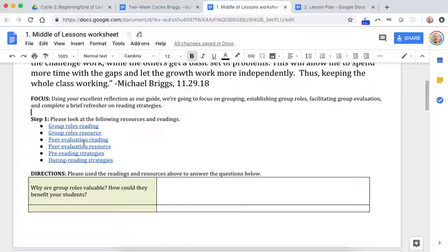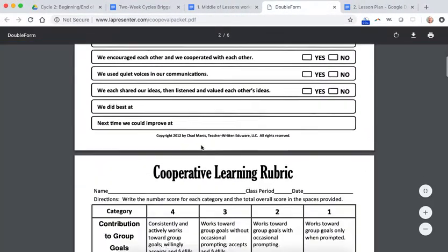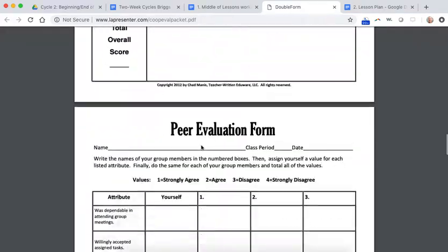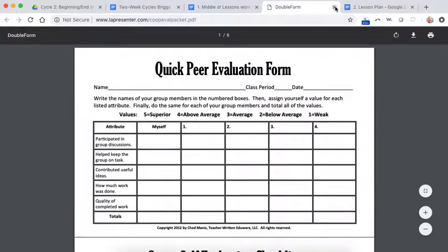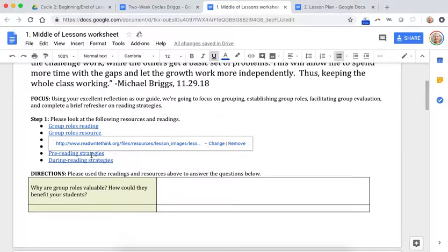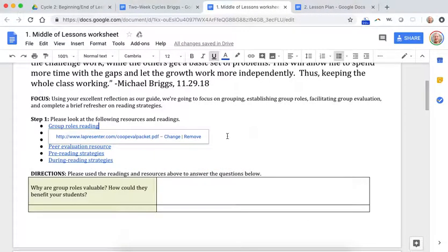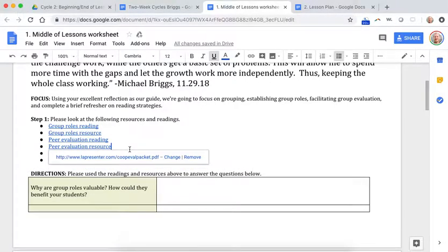Then there's a reading on peer evaluation, and then there's similarly a peer evaluation resource, sort of like rubrics where students can evaluate themselves and their peers based on the group work that they did. And then we have a couple links to some pre-reading strategies and some during-reading strategies. Those are from our literacy module.